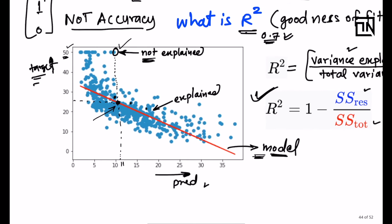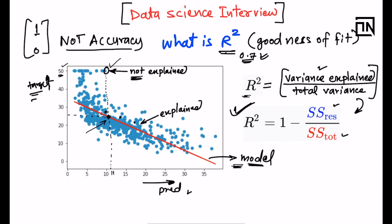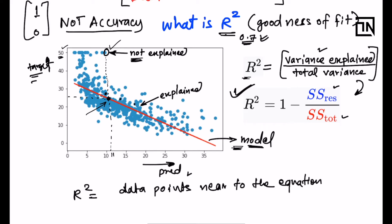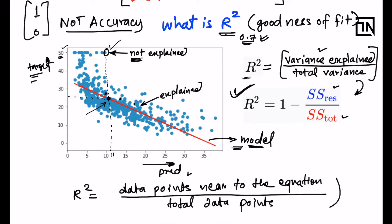This ratio — points near to the model which are getting explained versus all the points present — is what R squared represents. R squared is the data points near to the equation divided by total data points. It is a ratio of how many points are closer to the line versus how many points are totally present in the data.